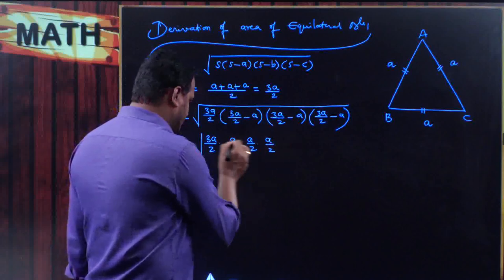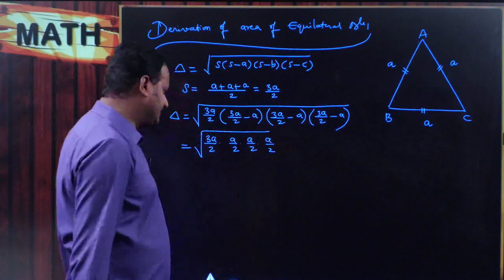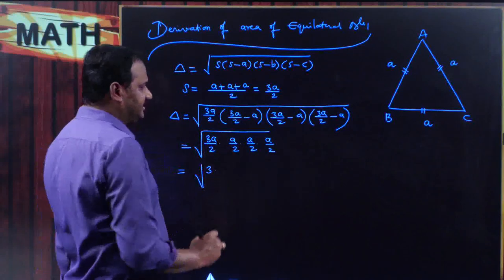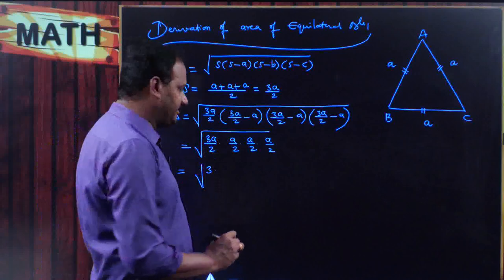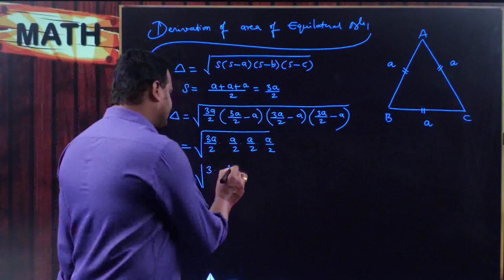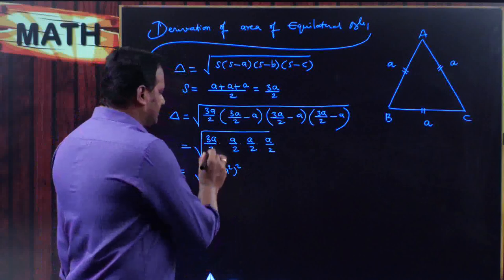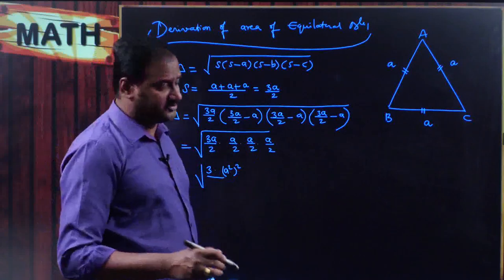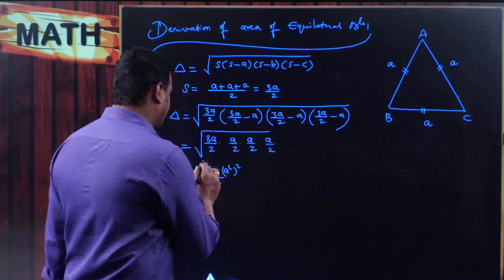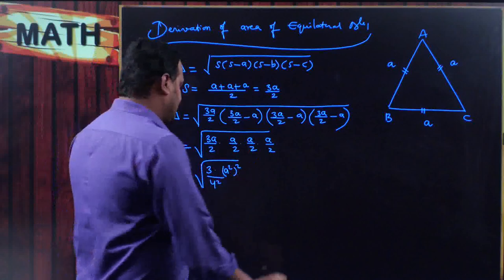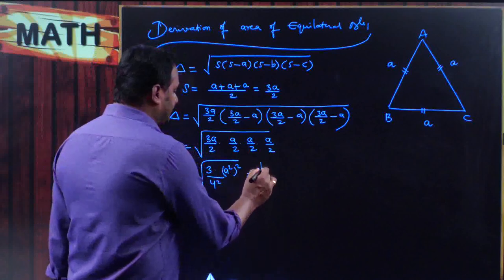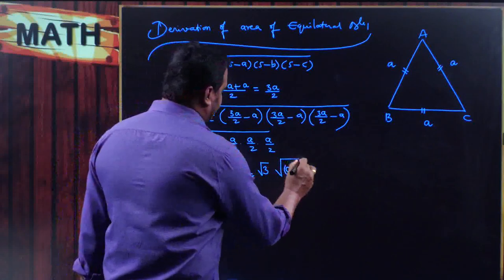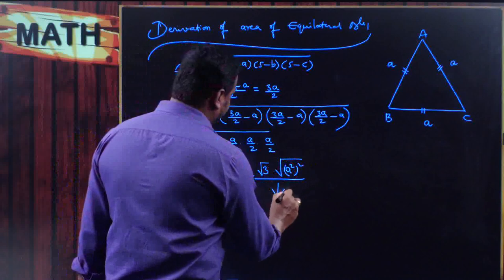Which is equal to square root of 3a upon 2 times — 3a by 2 minus a means 3a minus 2a by 2, which equals a by 2 — and the next term is also a by 2, and the next term is also a divided by 2. So the numerator becomes 3 times a into a equals a squared, into a squared equals a to the power 4. That is a squared whole squared, divided by 2 into 2 into 2 into 2, that is 2 to the power 4, which equals 4 squared.